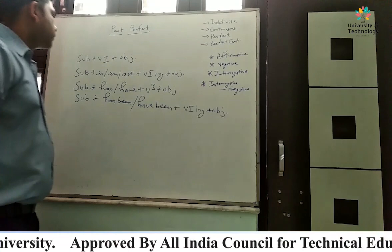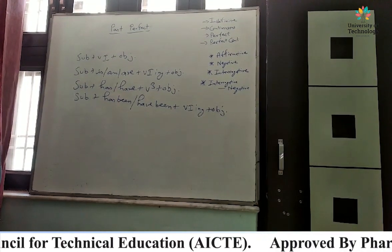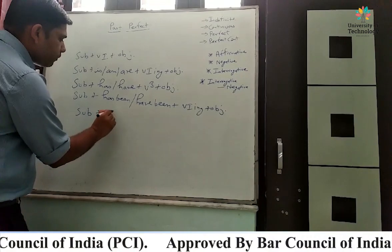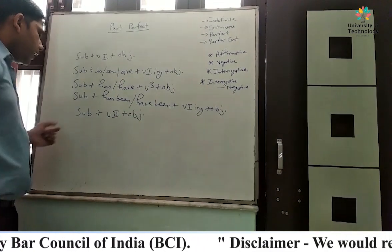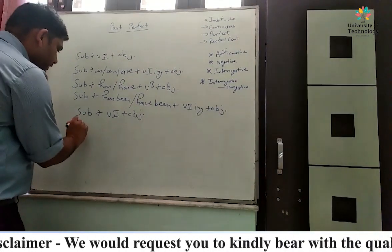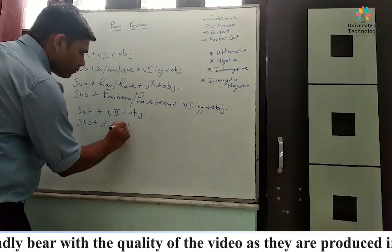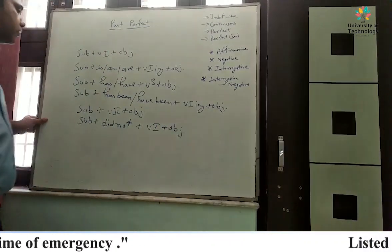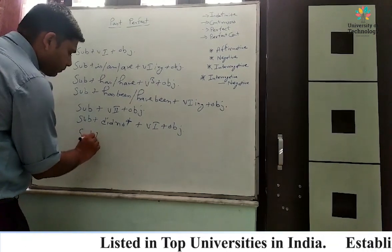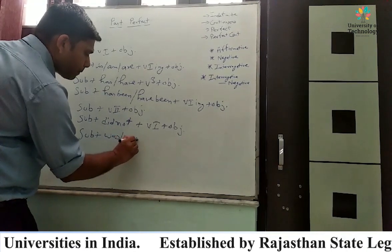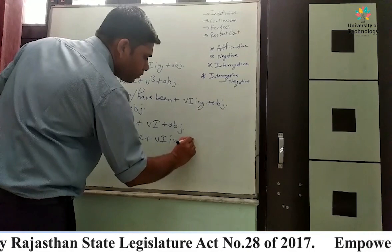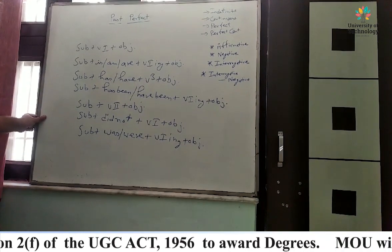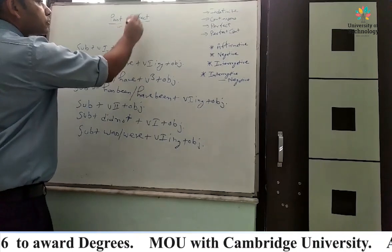For past tense we used subject plus verb second form plus object. In negative or interrogative we used 'did': subject plus did not plus verb first form plus object. For past continuous: subject plus was/were plus verb first form -ing plus object. Today we will discuss past perfect.